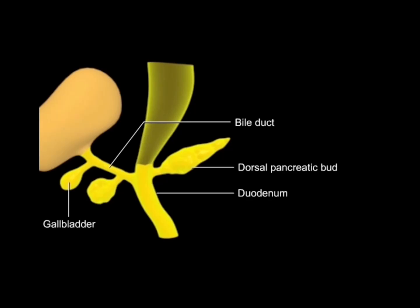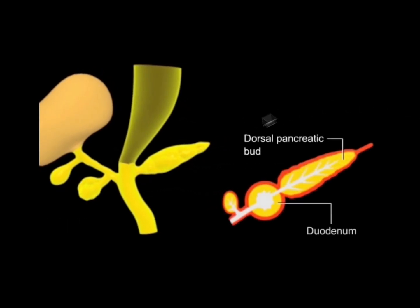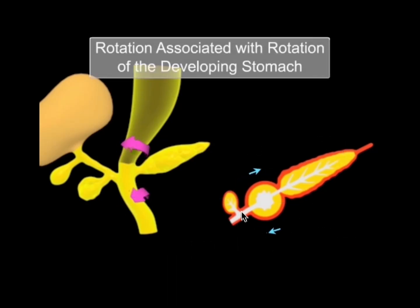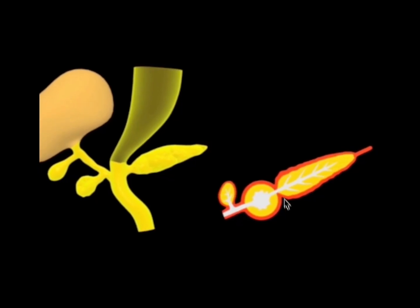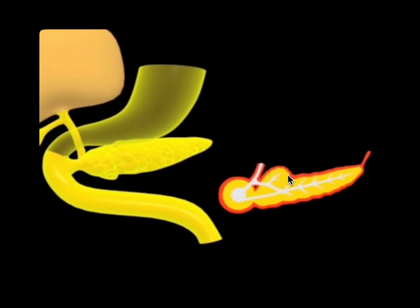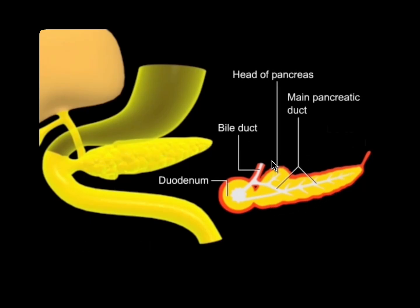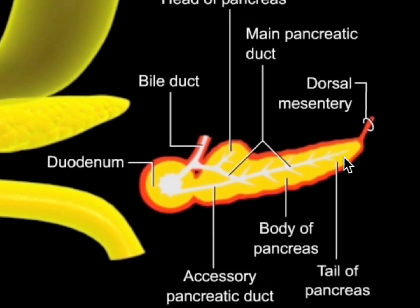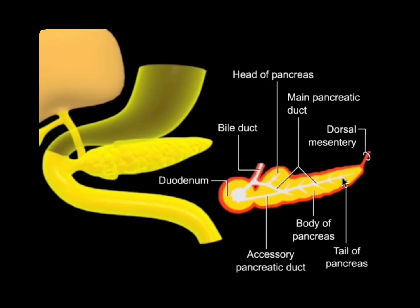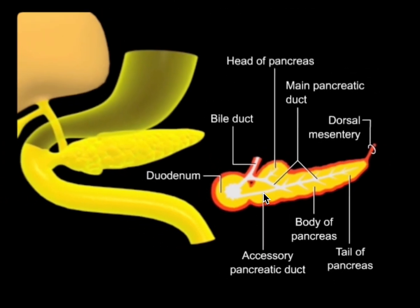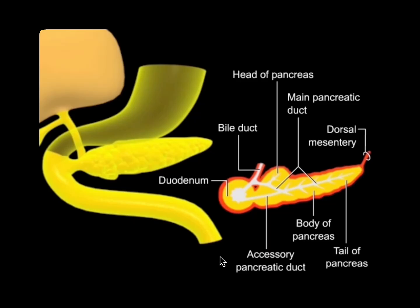The pancreatic duct is formed from the duct of the ventral bud and the distal part of the duct of the dorsal bud. In cross-section, we can see the dorsal pancreatic bud and ventral bud both connected to the duodenum. When the duodenum twists to the right, the ventral pancreatic bud and bile duct hitch a ride dorsally, and by week eight the two buds fuse. Both ducts contribute to the main pancreatic duct, and sometimes the proximal dorsal duct persists as the accessory pancreatic duct, opening into the minor duodenal papilla.